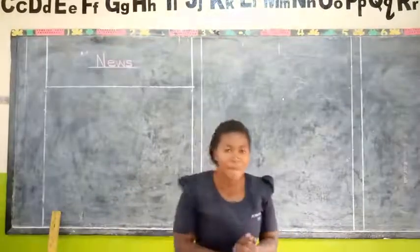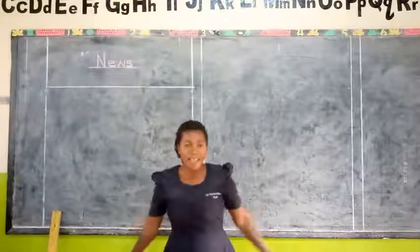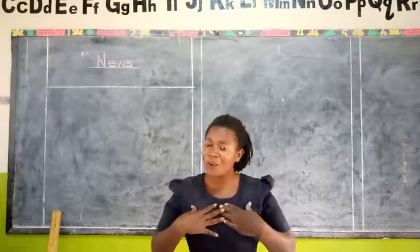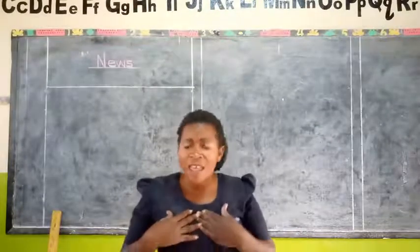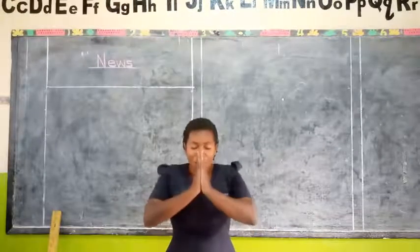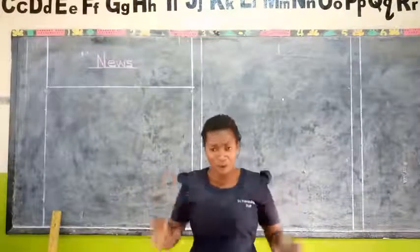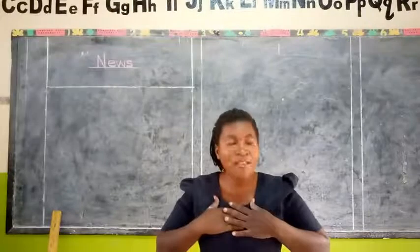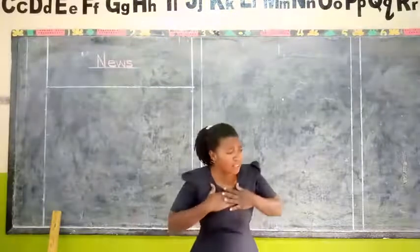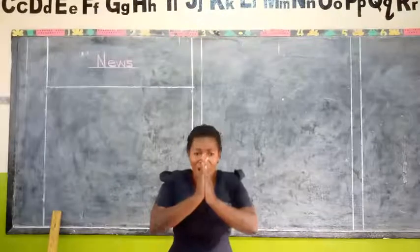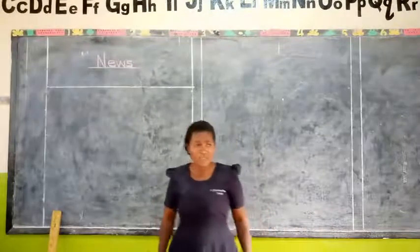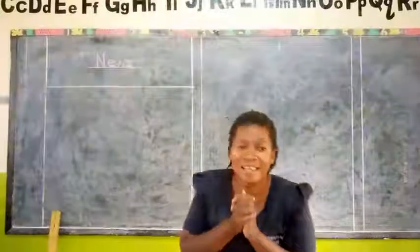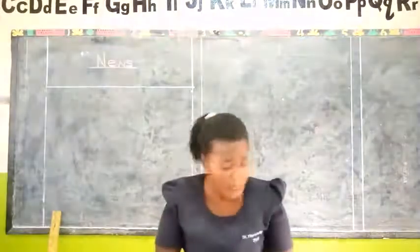The rhyme goes: 'I have a little cough in my little chaser, every time I cough, that's my little cough.' Once more: 'I have a little cough in my little chaser, every time I cough, that's my little cough.' Now you can sit down and we begin our lesson.